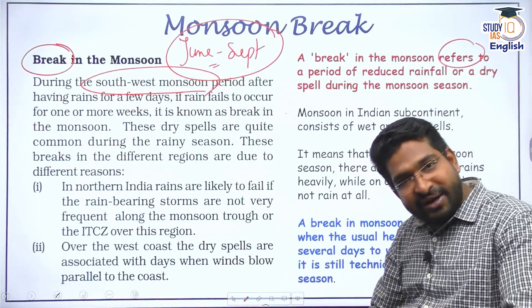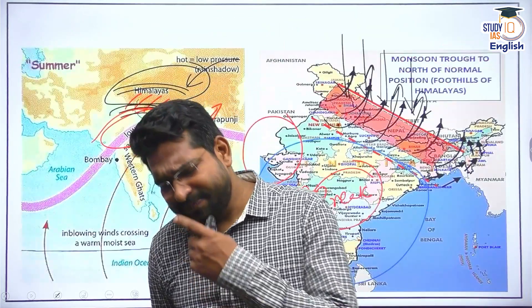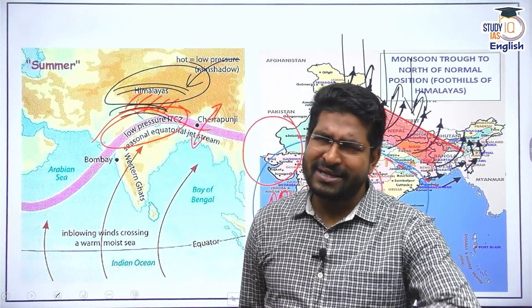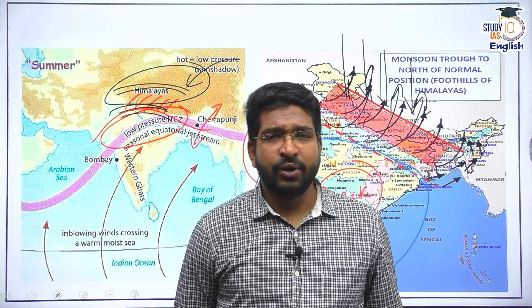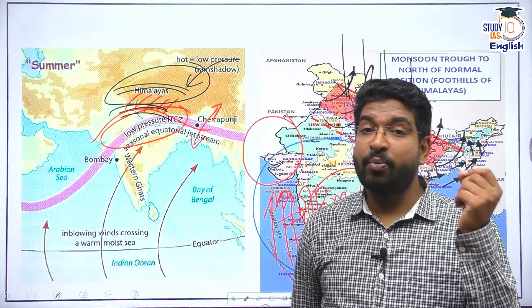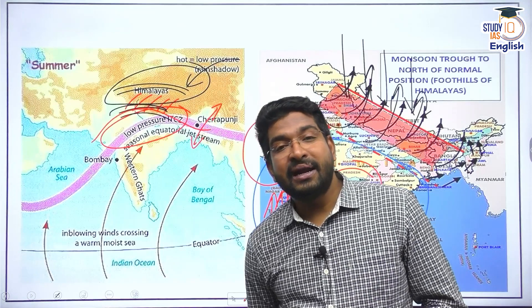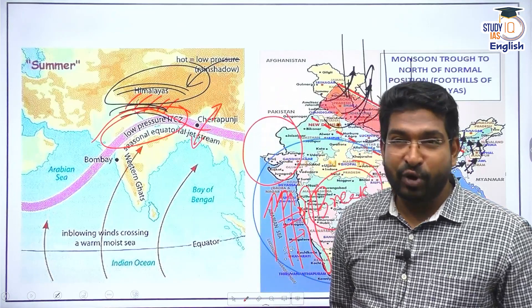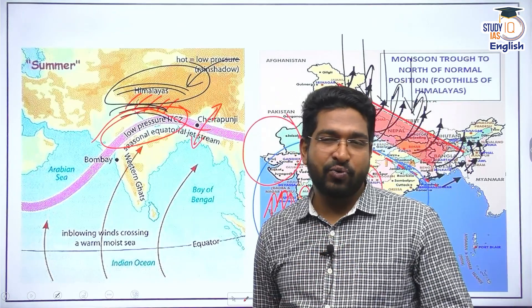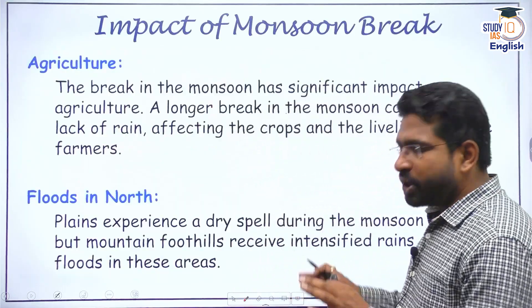Right now we are witnessing a monsoon break. One month back there was extensive rainfall — I hadn't seen sunlight for almost two to three weeks. And now for the last 10 to 15 days, not even a single drop of rain is seen, at least in my area. In mainland India, not much rain was seen especially from August 1st till August 12th or 13th. That is nothing but a monsoon break.